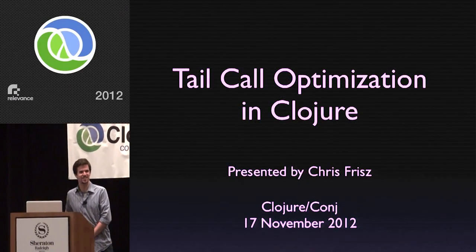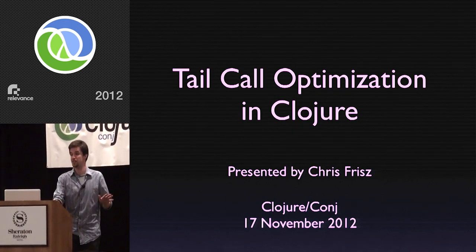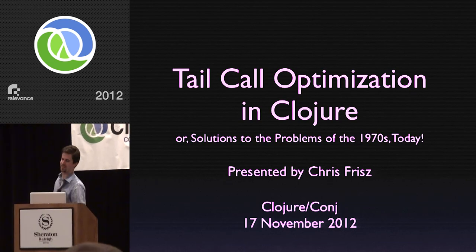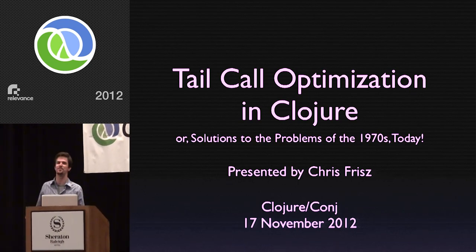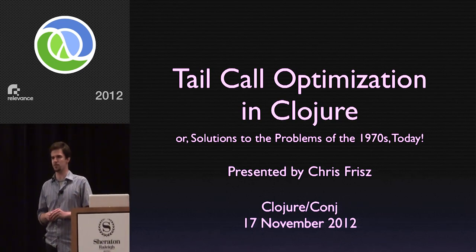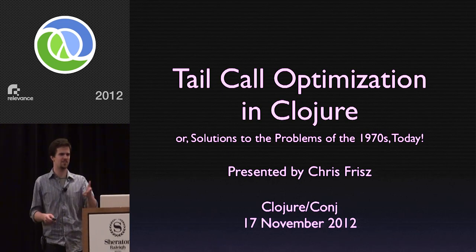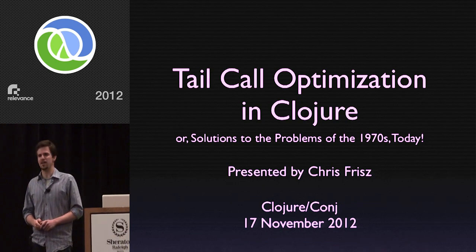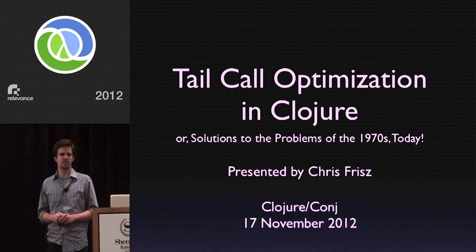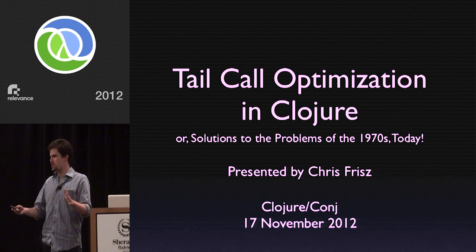How's everybody doing today? Three days of Closure Conj. We've seen a lot of really cool modern systems to handle new big problems facing the internet. And what I have for you today is some really old computer science — the problems of the 1970s. This actually came out of Closure Conj last year when Dan Friedman and Will Bird came for the first time. Dan was having a conversation with Rich about Closure as a language, asking about different features and whether it had tail call optimization. Rich said no, it doesn't have it and it's not really possible because of the JVM. Dan said he thought there was a way to do it, so he recruited me. And that's what we're talking about today.